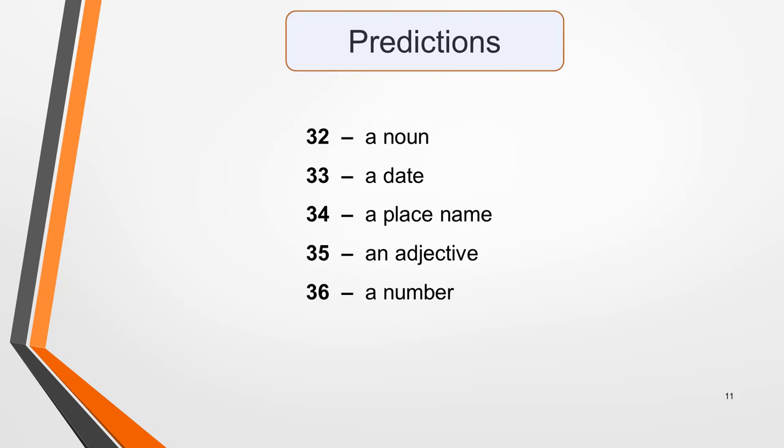Here are my predictions. Answer 32 will be a noun. Answer 33 a date. Answer 34 a place name. Answer 35 an adjective. Answer 36 a number. You can see that just a few seconds spent doing this can give you a lot of information about what you need to listen for in the recording. This will greatly improve your chances of identifying the correct answers.